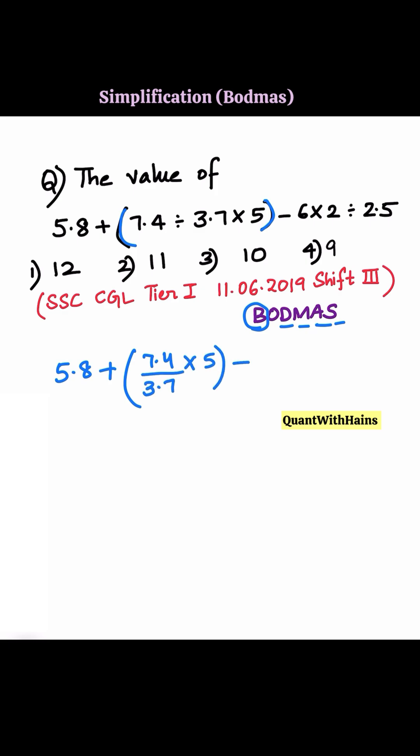Minus 6 times 2 divided by 2.5. So 5.8 plus, we need to resolve this. The decimals get cancelled: 2 times 5 equals 10. Minus 6 times 2 divided by 2.5, which we can write as the fraction 5 by 2.